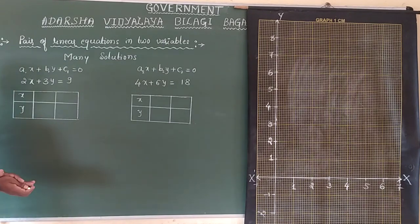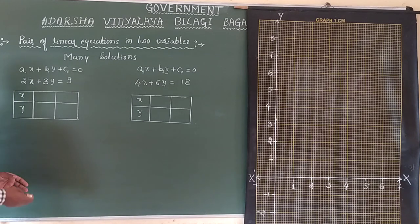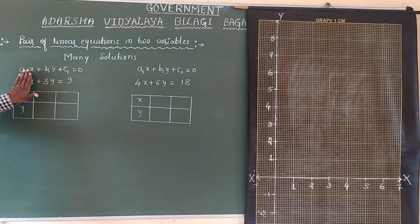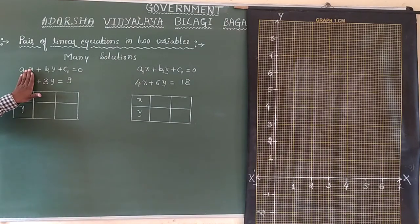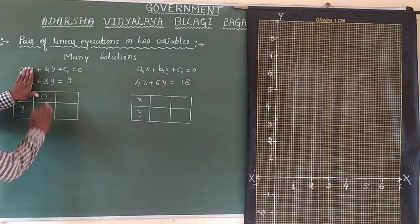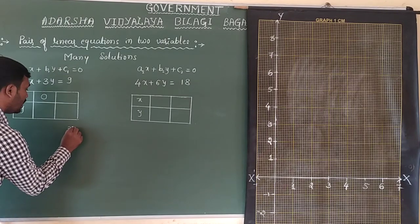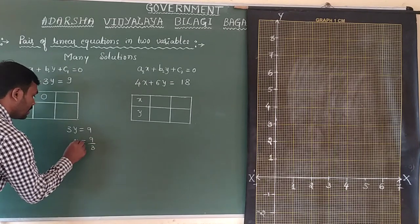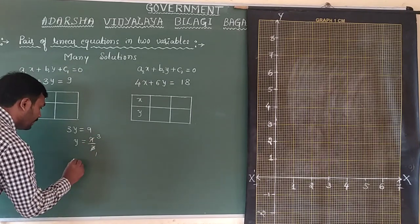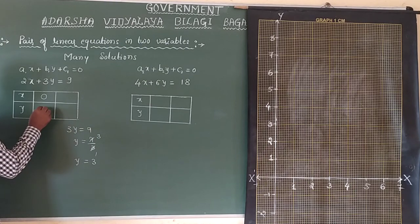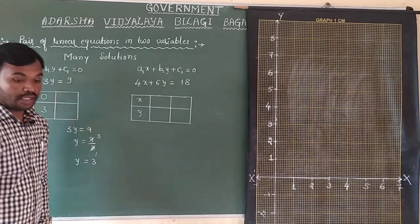I am going to use the same procedure to calculate the values for x and y. The first equation is 2x plus 3y equals 9. I will hide 2x — x becomes 0 — so we have only one variable: 3y equals 9. Therefore y equals 9 by 3, which is 3. When x is 0, y is 3.